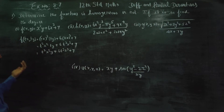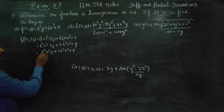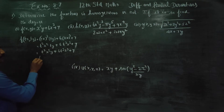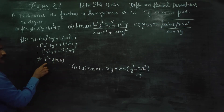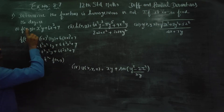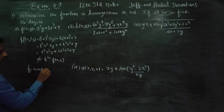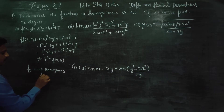You take the value of t cubed. The original sum repeats, but this is not equal to t power n into f(x, y). You cannot write it as t power n times the original function. Therefore, f is not a homogeneous function.